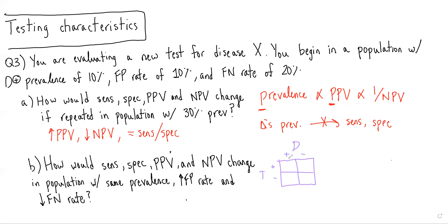The upper left is true positives — patients who get a positive test result and have disease. Upper right is false positives — patients who get a positive test result but do not have the disease. Bottom left is false negatives — patients with a negative test result who do have the disease. And bottom right is true negatives — patients with a negative test result who do not have the disease.